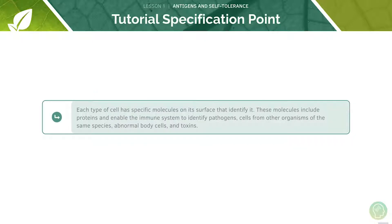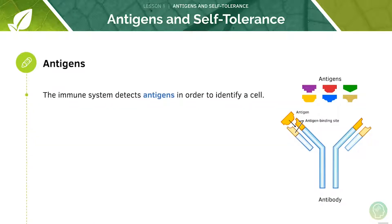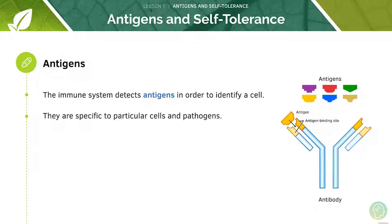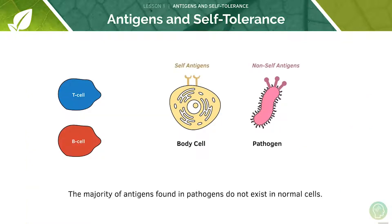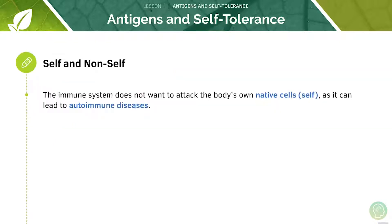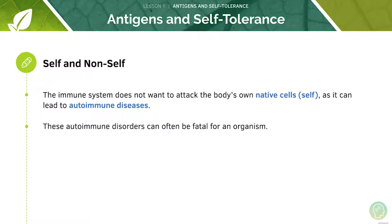We'll now look at the surface molecules that identify cells. The immune system will detect antigens in order to identify a cell. These are unique and specific to particular cells and pathogens. The majority of antigens found in pathogens do not exist in normal cells. Another important concept is that of self and non-self. The immune system won't want to attack the body's own cells as this can lead to autoimmune disorders, which can be fatal for an organism.